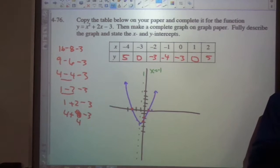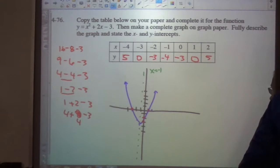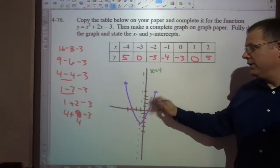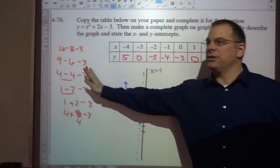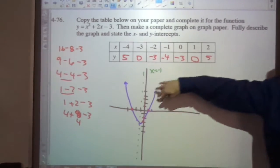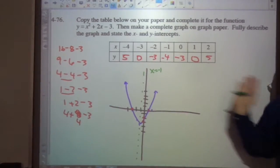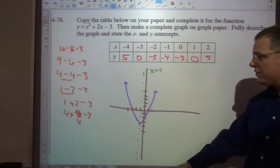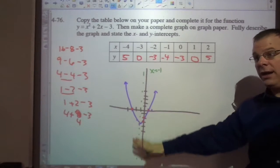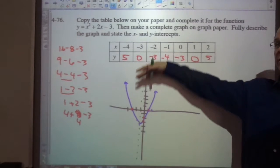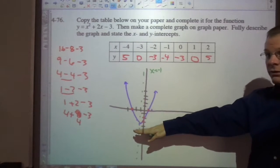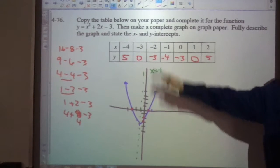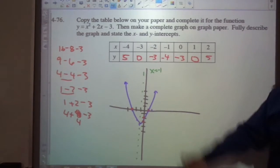What's the domain? What are the x values it could possibly be? Will it keep on going this direction forever and ever? Can it be every x value left and right? Yeah. Domain is all reals. The range, can it go all the way up and all the way down? All the way up and all the way down to here. Right? We would say the range is any number greater than negative 4. Negative 4 is the bottom.